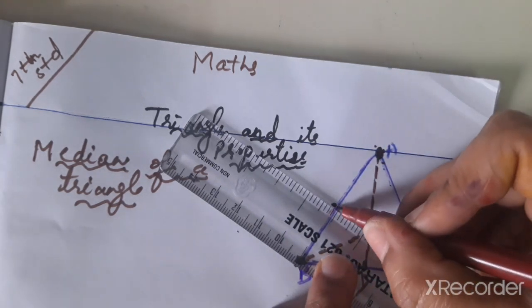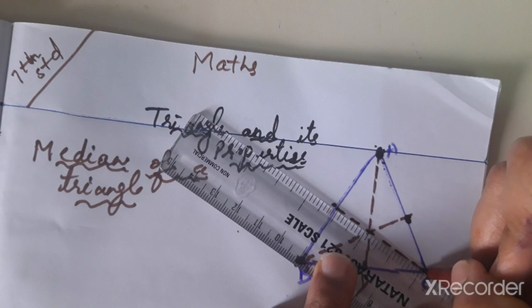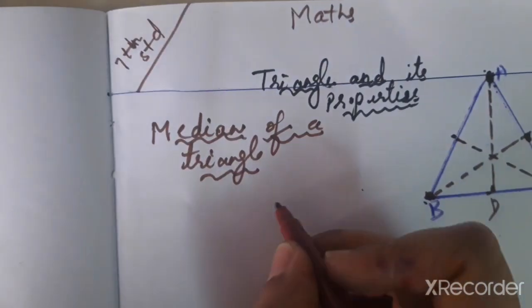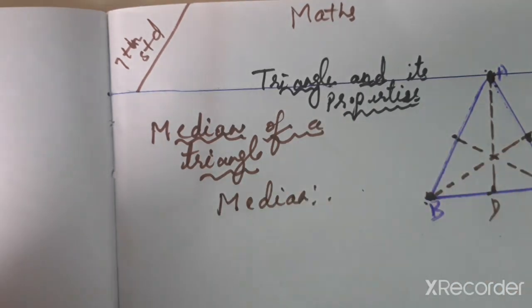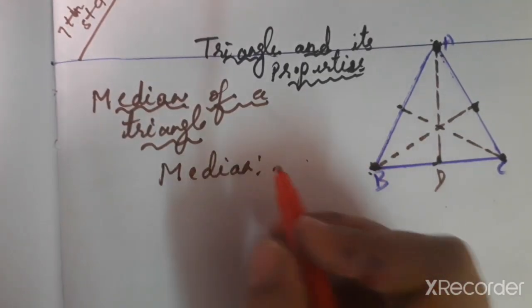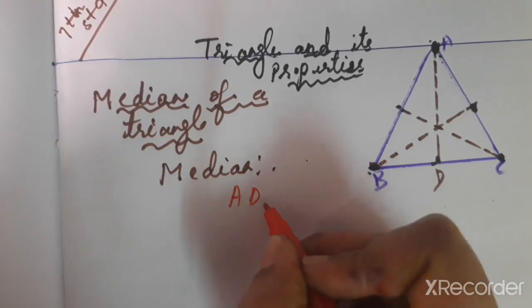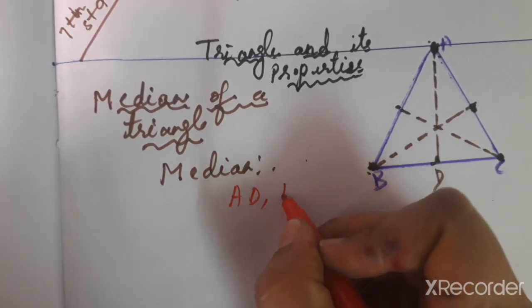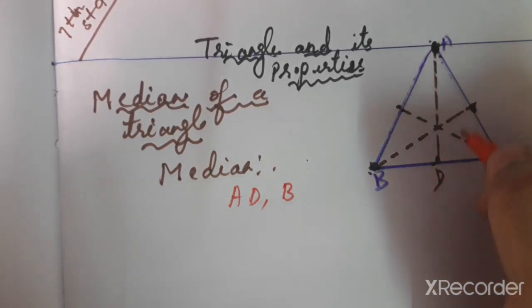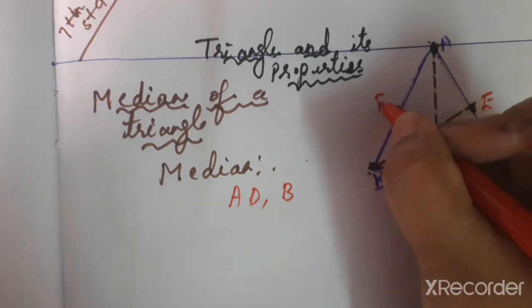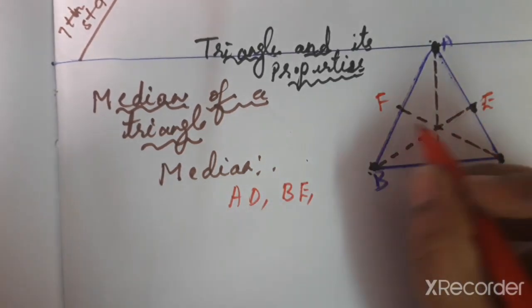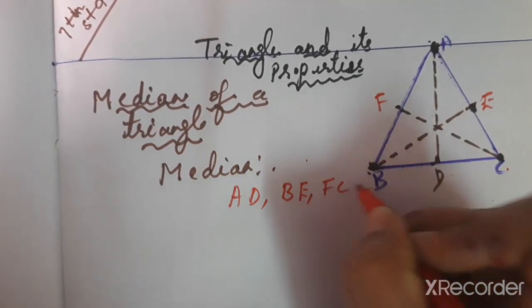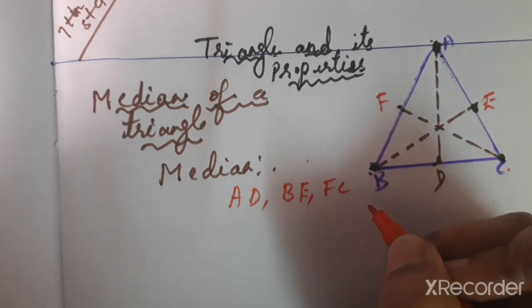We also draw a median from vertex B to the midpoint of the opposite side, and from vertex C to the midpoint of its opposite side. So in this triangle, the three medians are AD, BE, and CF. AD is a median, BE is a median, and CF is also a median of the triangle.